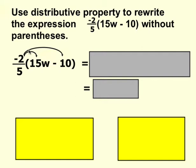So what you're going to do is distribute, which is multiply negative 2 fifths to the 15w term within the parentheses, but you are also going to multiply negative 2 fifths with negative 10. So go ahead and just follow these arrows and make sure that you're using multiplication.